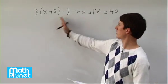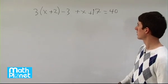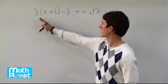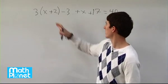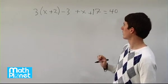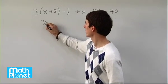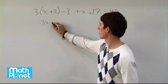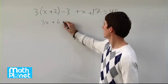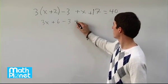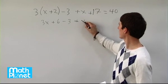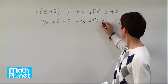We need to simplify before we can go too far. First, let's distribute the 3 through this quantity, then we'll combine like terms. 3 times this quantity gives us 3x, 3 times 2 is 6, so 3x plus 6. Then we can write out the rest of the terms: minus 3 plus x plus 17 equals 40.